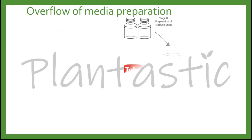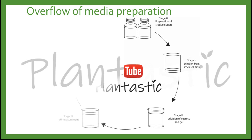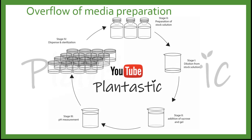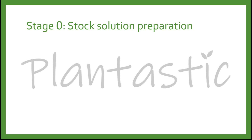Here is the overview of the media preparation. Stage 0 is preparation of stock solution, followed by dilution from stock solution. For the working solution, you need to add sucrose and gelling agent as well. After pH measurement, you can dissolve the agar using a microwave, then dispense the media into each container and sterilize it. Remember, the container must be heat-tolerant, as well as the lid.